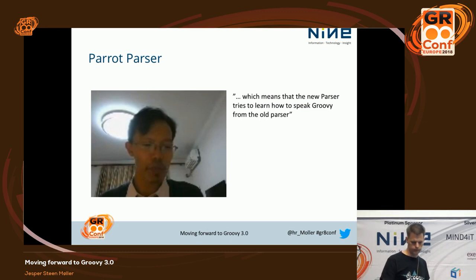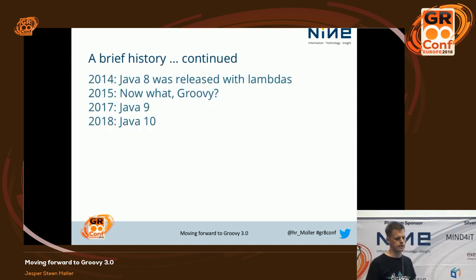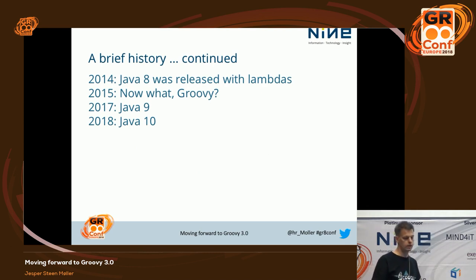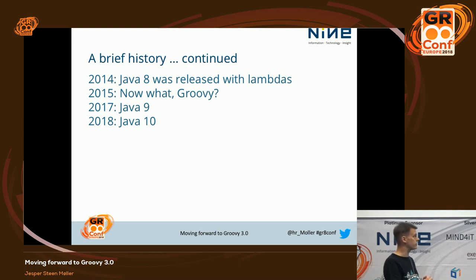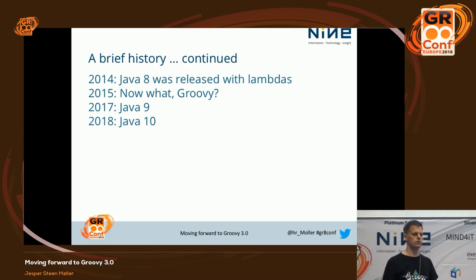This new Parrot is not dead at all — it may not be Norwegian Blue. Why is it called Parrot? It means the new parser tries to learn how to speak Groovy language from the old parser. The continued history is that in 2014, Java was released with Lambdas — so what about Groovy? Then Java 9 came out last year and Java 10 this year, and we'll have a Java 11 this year too. It looks like Oracle is actually on schedule by adding very few things, but still releasing.